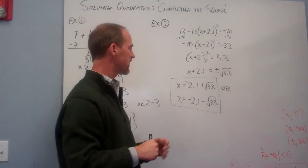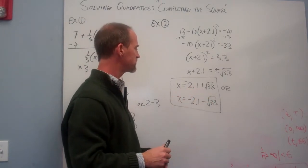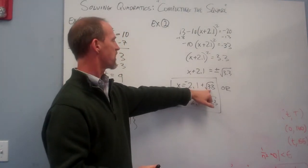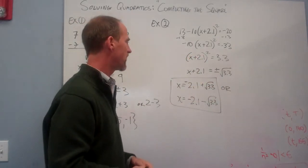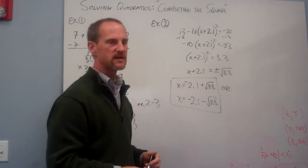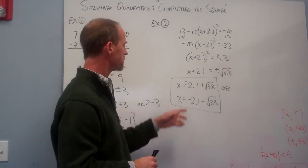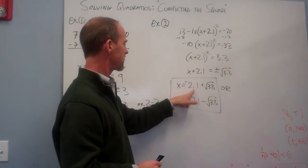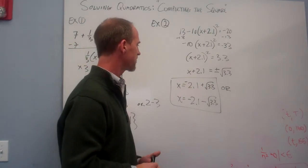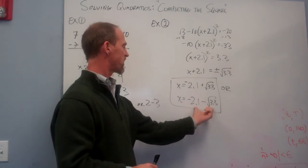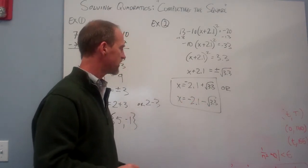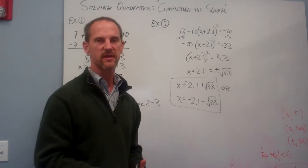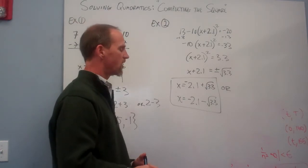Now these are not pretty solutions, but they're real solutions. I could take a calculator and I could get a decimal approximation for them. Square root of 3.3 is going to be about like 1.7 or something like that. And if I'm adding that to negative 2.1, I might get like a negative 0.4. Here when I'm subtracting, I might get a negative like 3.8 or something like that. But you can check and see. All right.